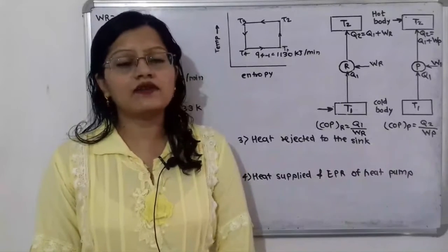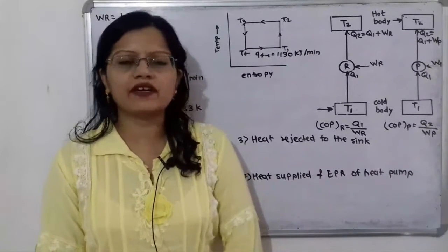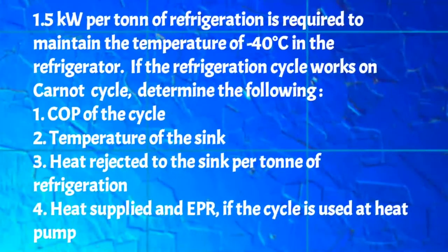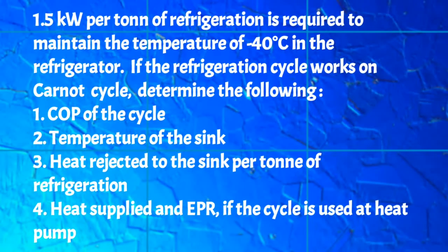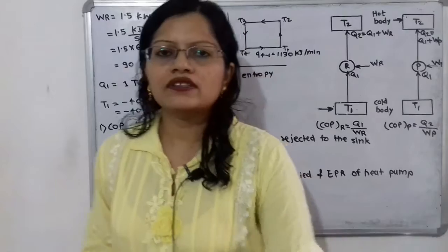Hello friends, this is Priyanka. Today we are going to solve a problem on the reversed Carnot cycle. The given problem: 1.5 kilowatt per ton of refrigeration is required to maintain a temperature of minus 40 degree Celsius in the refrigerator. If the refrigeration cycle works on the Carnot cycle, determine: the coefficient of performance of the cycle, temperature of the sink, heat rejected to the sink per ton of refrigeration, heat supplied, and EPR if the cycle is used as a heat pump.